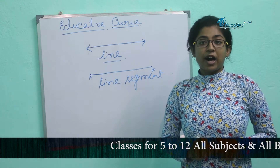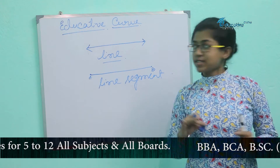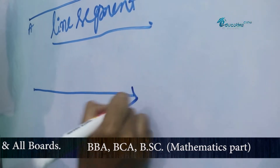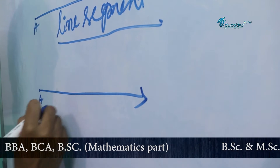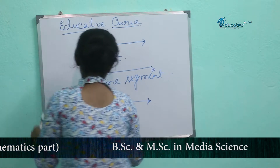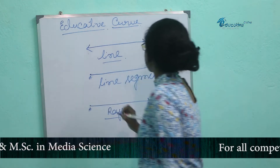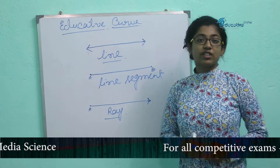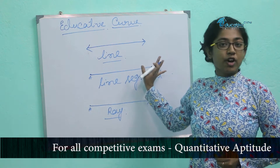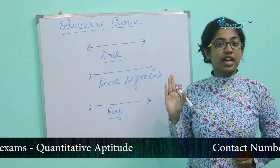A ray is the part of a line which has one starting point but has no endpoint. For example, we can say that a ray is an example of this. So from the above discussion, we can say: a line has no endpoints, a line segment has two endpoints, and a ray has one starting point.